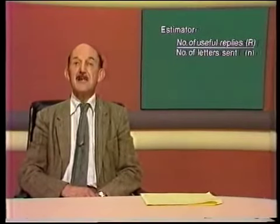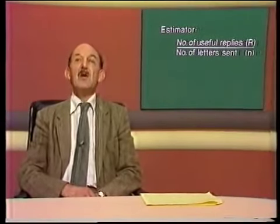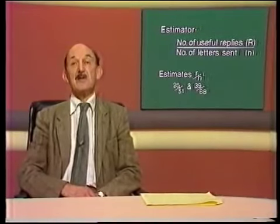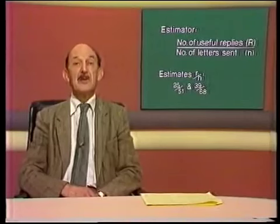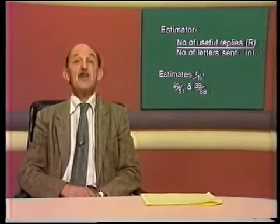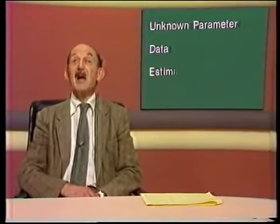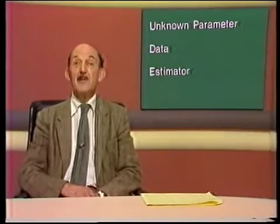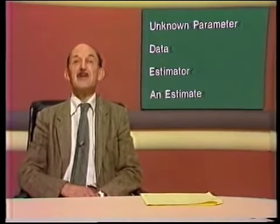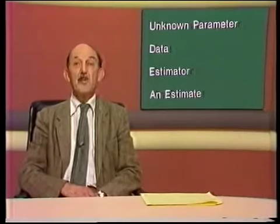r over n is the estimating formula for p. We call it an estimator. With particular data sets, we get particular values of the estimator. For example, 25 over 51, or 39 over 68. These are estimates. This is a simple example, but it has all the essential features of the type of problem we'll be dealing with in the program. An unknown parameter that we wish to estimate, some data, an estimator or estimating formula, and the particular number or estimate that it produces from our data. And this technique which we'll be investigating is called point estimation.